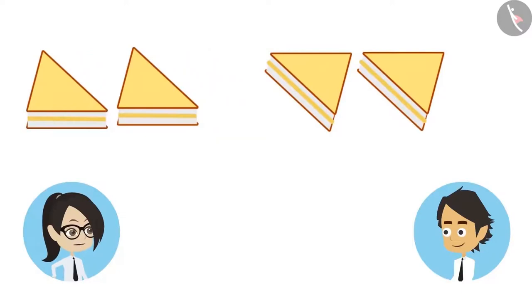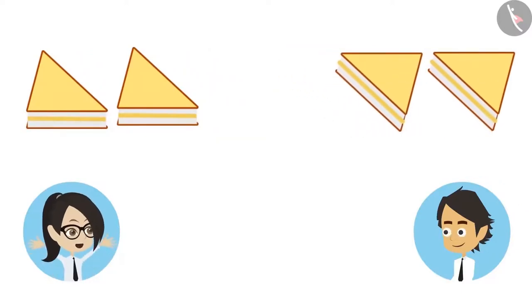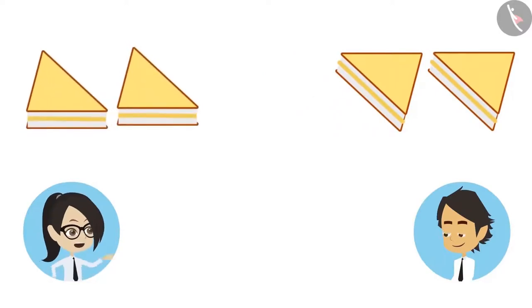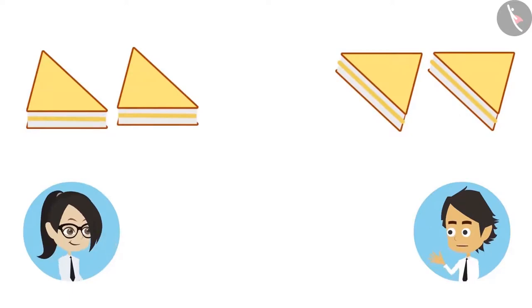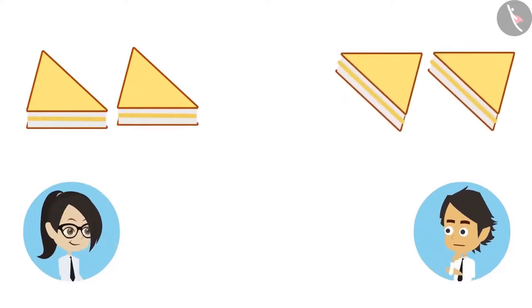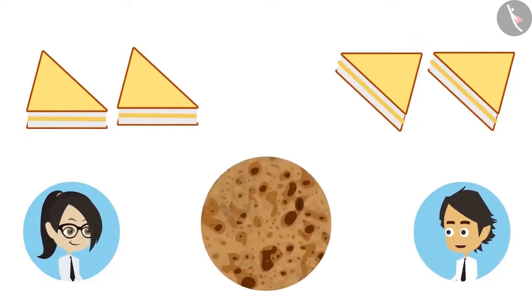I will keep one part for myself and share the other part with you. Now look, I have two sandwiches and you too have two sandwiches. Now I have half of your sandwich. But we could count the sandwiches and find the number of halves. But I have only one paratha — how will we divide it into two halves?